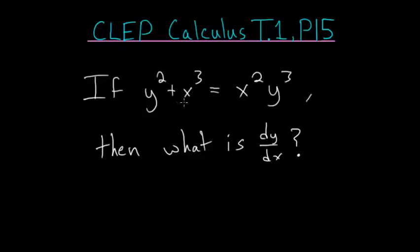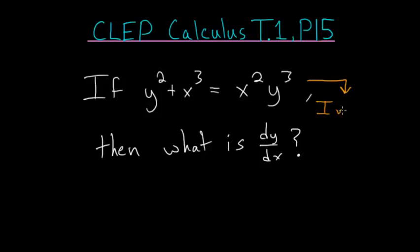If y squared plus x to the third power is equal to x squared times y to the third power, then what is the derivative of y with respect to x? Since we're dealing with an equation where we don't have it solved for y, we have to use what's called implicit differentiation.